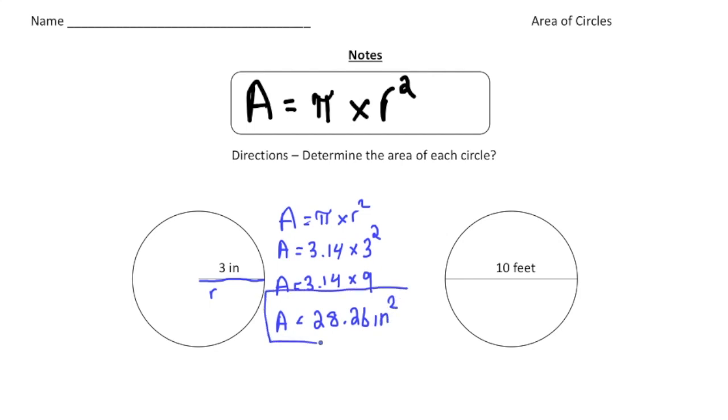Alright, so there is the area of a circle that has a radius of 3 inches. Now this one, notice they give us the diameter. Alright, and remember the diameter is twice the radius. So we need to cut this in half to get the radius. So we know the r value is going to be 5.